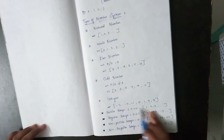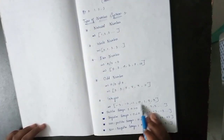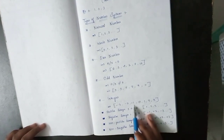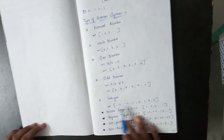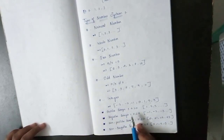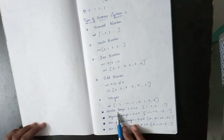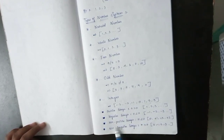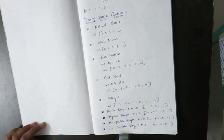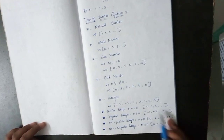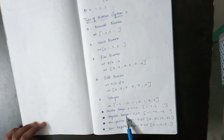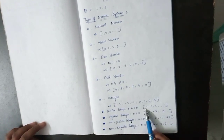For integers, we look at the number line: 0, 1, 2, 3 and minus 1, minus 2, minus 3. There are 4 types of integers: positive integer, negative integer, non-positive integer, and non-negative integer. Positive and negative integers give us natural numbers, and non-negative and non-positive give us whole numbers.